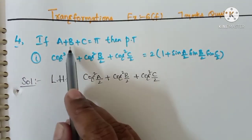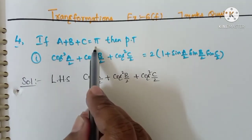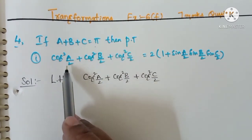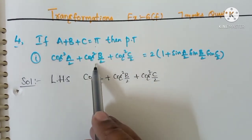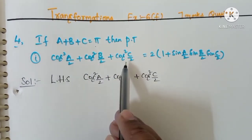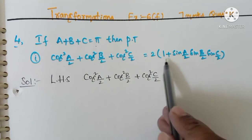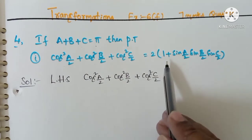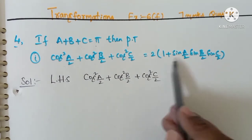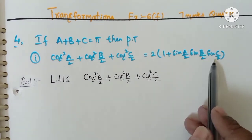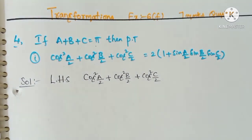The problem states: If a plus b plus c is equal to pi, then prove that cos squared a by 2 plus cos squared b by 2 plus cos squared c by 2 is equal to 2 into 1 plus sin a by 2 into sin b by 2 into sin c by 2. We need to prove this.